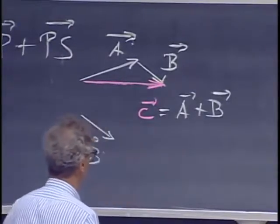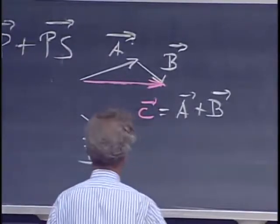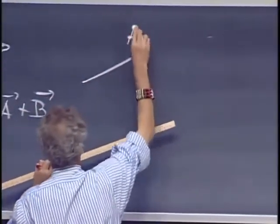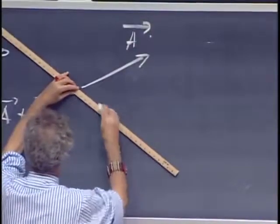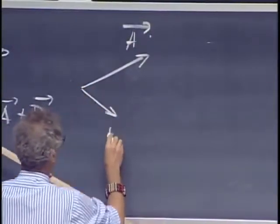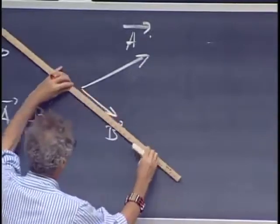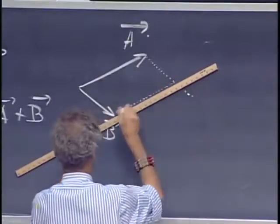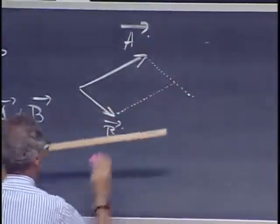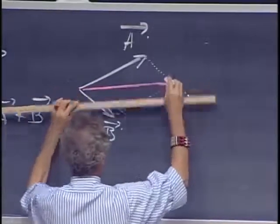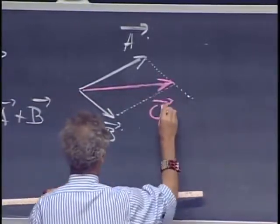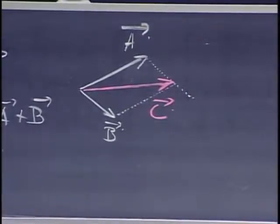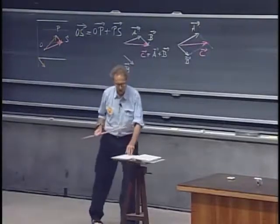There's another way you can do it, and I call that the parallelogram method. Here you have A. You bring the two tails together. So here is B now. So the tails are touching. And now you complete this parallelogram. And now this vector C is the same, some vector that you have here, whichever way you prefer. You see immediately that A plus B is the same as B plus A. There is no difference.